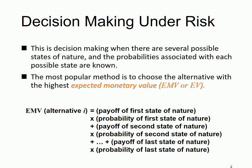Essentially, EMV is the expected value we talked about previously. The EMV for an alternative or a possible option of a decision is simply the payoff of every possible outcome times their corresponding probability, and you sum them up. So it's a sum of payoff times corresponding probability.